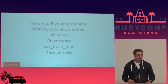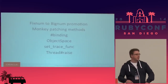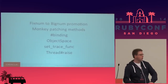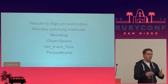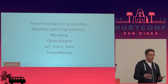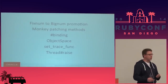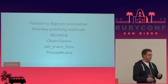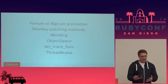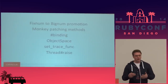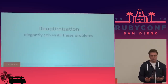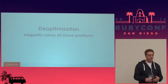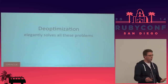Thread raise allows you to send an exception from one thread to another — again, you need to keep doing checks: have I got something I should be raising in this thread? So those checks are the problem that we need to get rid of. And de-optimization elegantly solves all these problems.